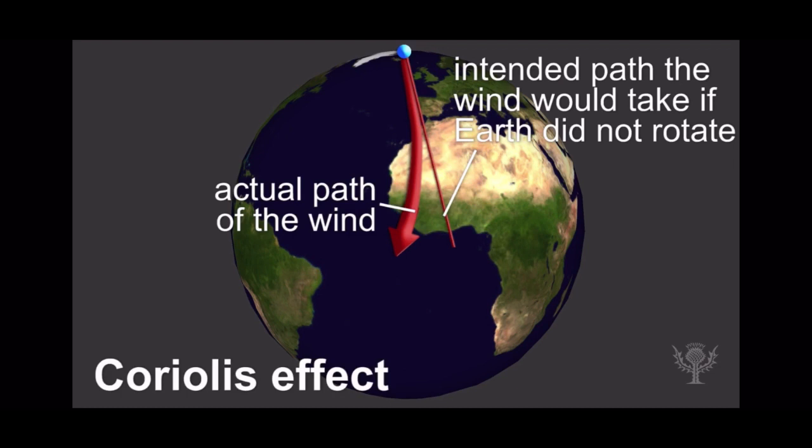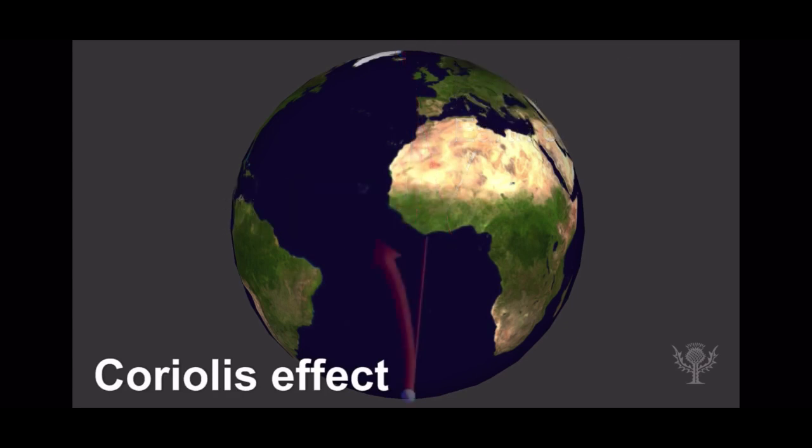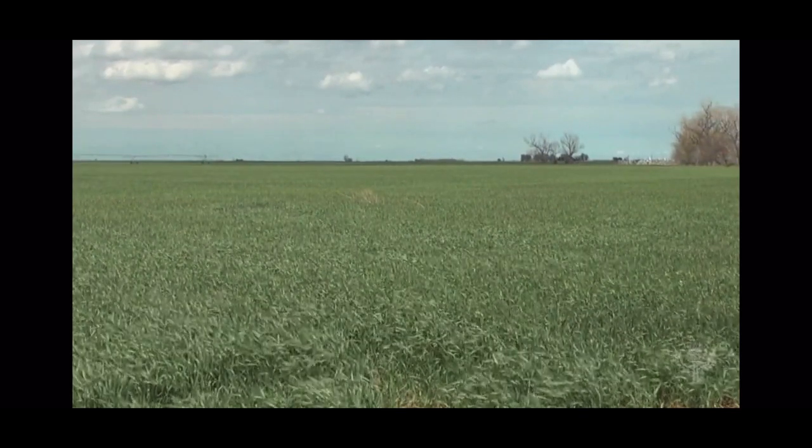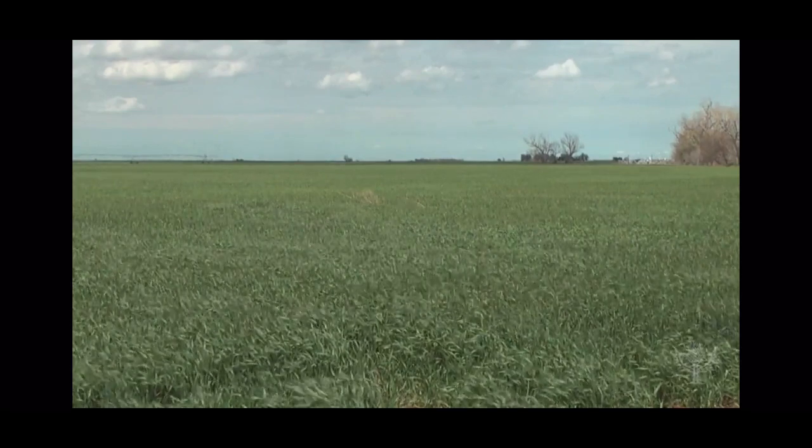In the northern hemisphere, wind curves to the right in the direction of motion. In the southern hemisphere, it curves to the left. Whereas differences in air pressure create wind, factors such as the Coriolis effect shape how it moves.